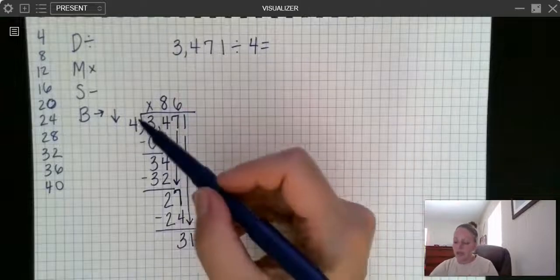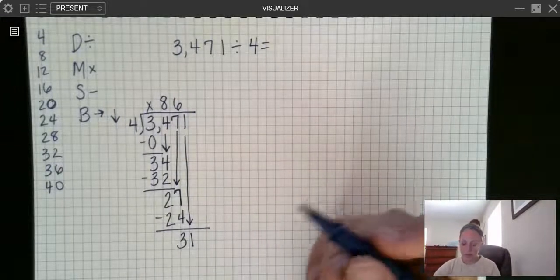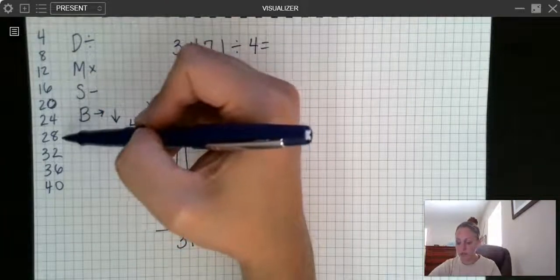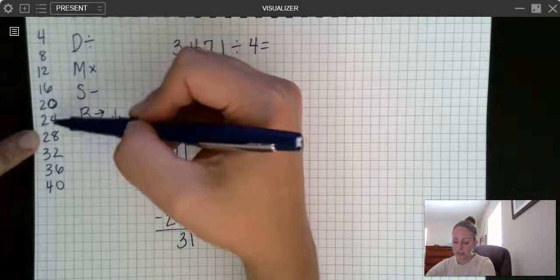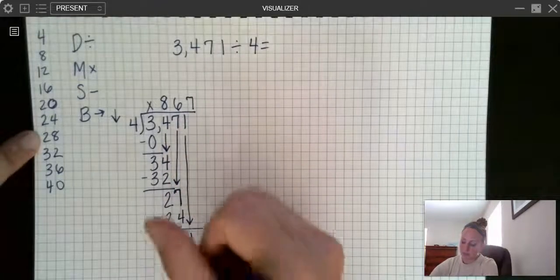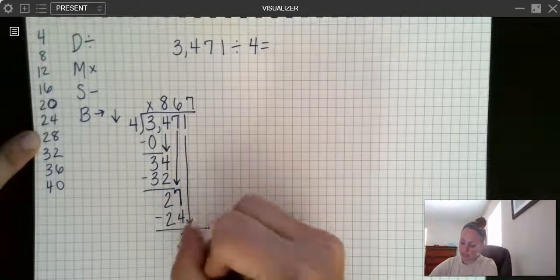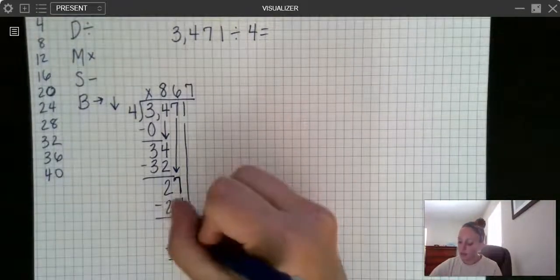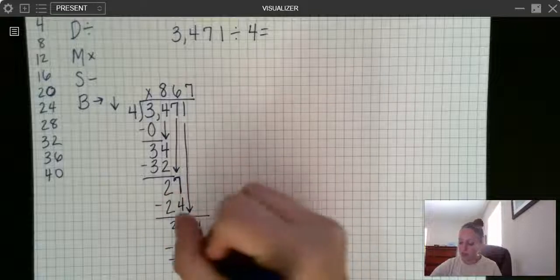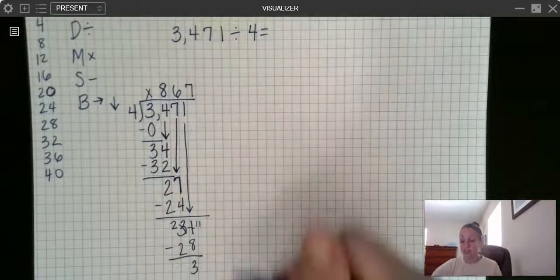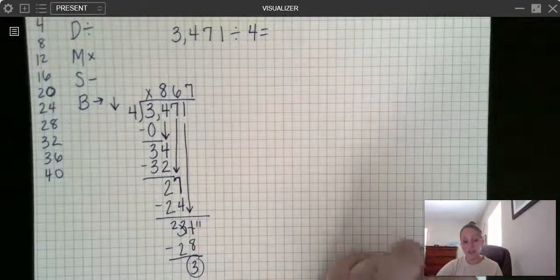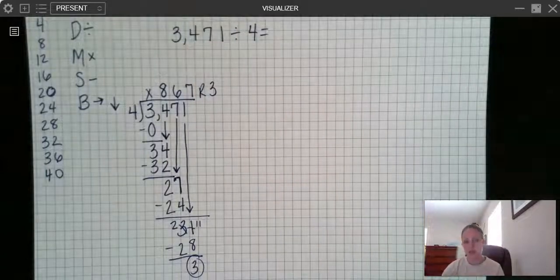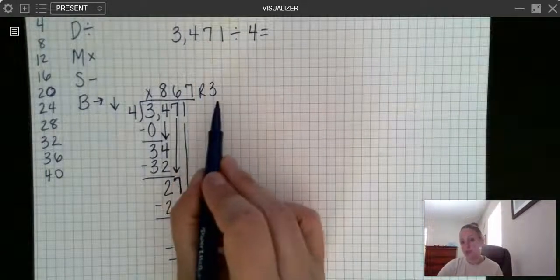So now I have to bring down my one. And I want to think, how many times can four go into 31? Well, let's look at this list. We have 28, 32. 32 is bigger, so we have to go with this one. One, two, three, four, five, six, seven times. And seven times four is 28, and then I'm going to subtract. Oh, I have to do some regrouping. That's okay. You can regroup when you're doing subtraction here. That becomes an 11, that becomes a two, 8, 9, 10, 11. I have three left. There's nothing left to bring down. So if I have a number right there, that becomes my remainder. So the answer or the quotient is 867 and there's a remainder of three.